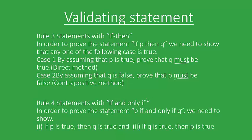To prove a statement 'p if and only if q', we need to show that if p is true then q is true, and if q is true then p is true. This is also written as p implies q, using a particular symbol which represents this statement.